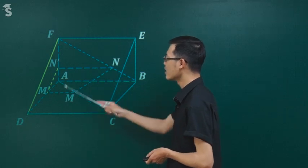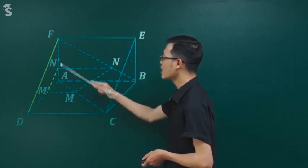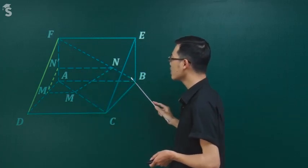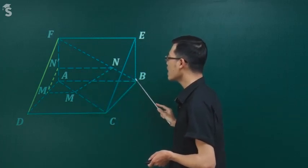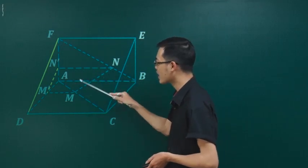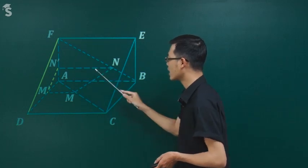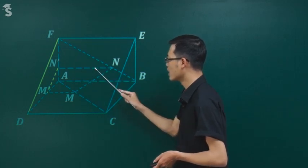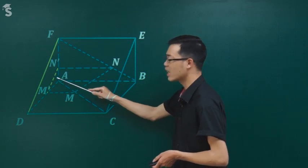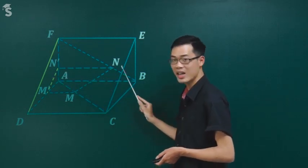Thực ra cái này rất dễ. AN'/AF thì lại tương ứng đúng bằng BN/BF. Tại sao? Vì NN' song song AB. Xét tam giác AFB thì NN' song song AB nên tỷ lệ AN'/AF = BN/BF. Hoàn toàn tương tự AM'/AD = AM/AC vì MM' song song CD. Cái tỷ lệ này hay chơi kiểu bắt cầu - tỷ lệ này bắt cầu sang tỷ lệ bên kia.